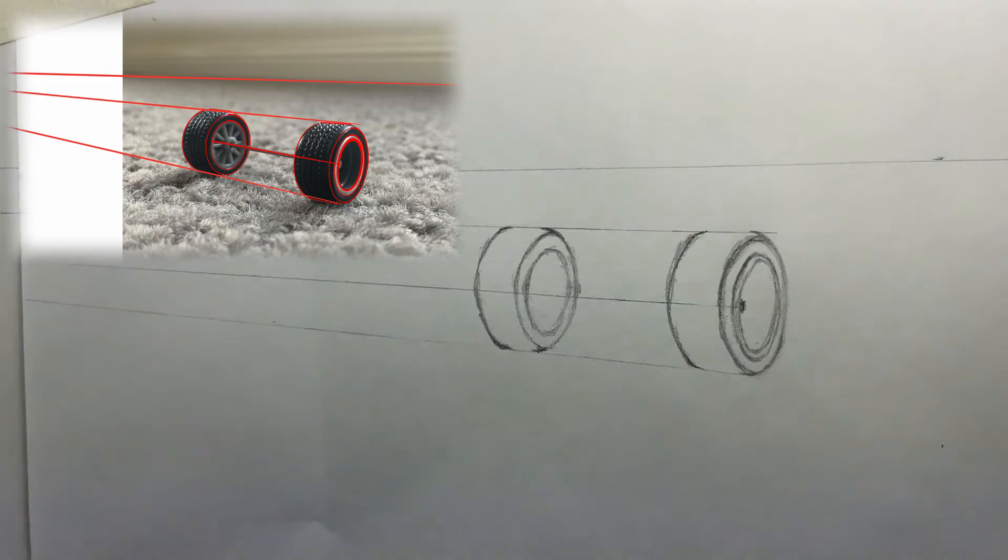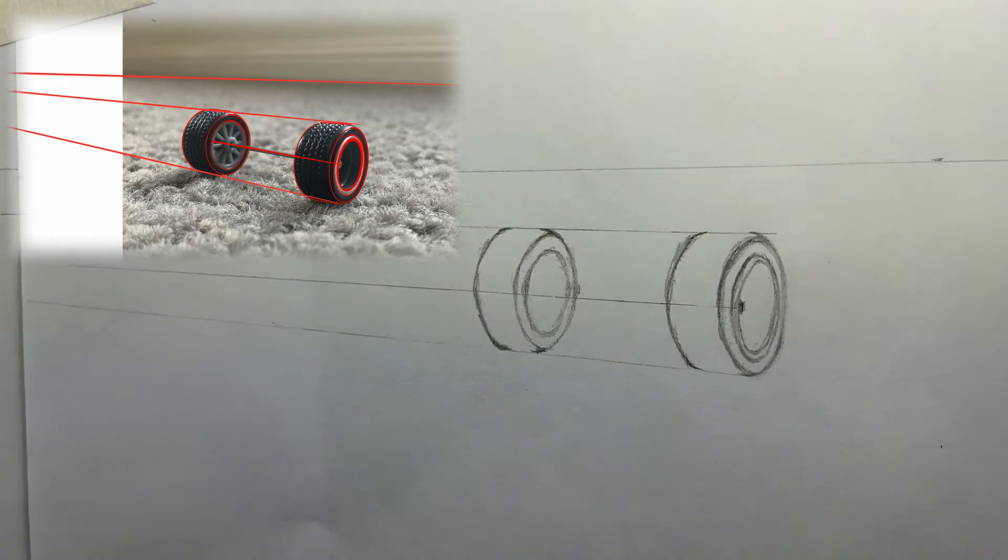Next, draw straight lines along the perspective lines in between these tiny curves.